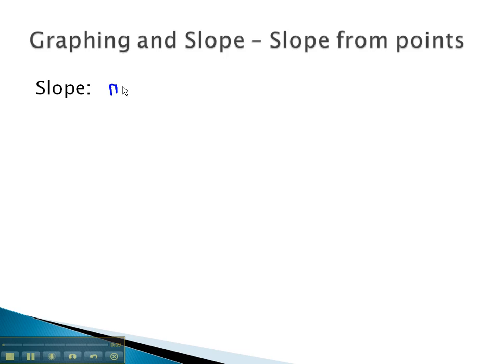Slope, we have said, is represented with the letter m, which is calculated by the rise over the run. When we say the rise over the run, the rise can be thought of as the change in y, and the run, because it's horizontal, is the amount of change that occurs in the x values.